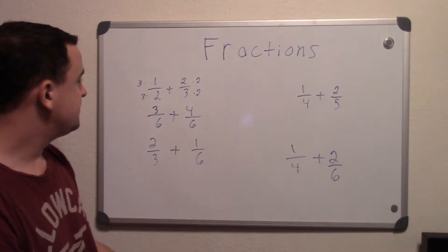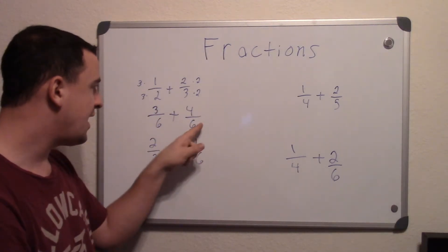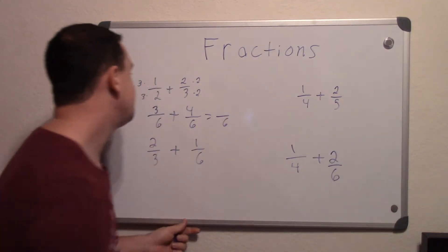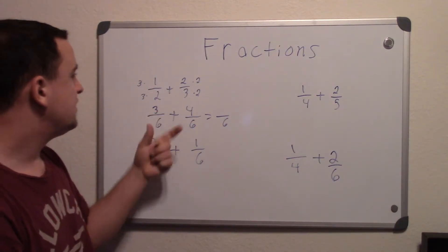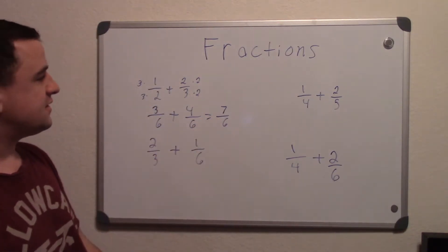Once you get like bases, you then just simply add them. You add them across, and when you add them, you always leave the bottom the same. So we know right away, the answer is over 6, and 3 plus 4 is 7, and that's your answer, 7/6.